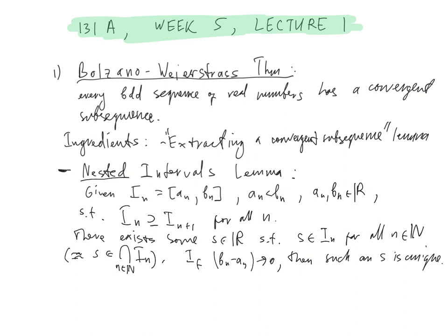This principle is in fact equivalent to the completeness axiom of the real numbers. We established the nested intervals lemma using the completeness axiom, but it's also possible to do things in reverse — to assume the nested intervals lemma as an axiom and deduce the completeness axiom from it. So these two properties of the real numbers are equivalent to each other; each one can be deduced from the other.